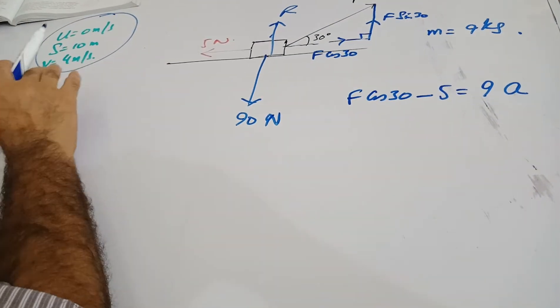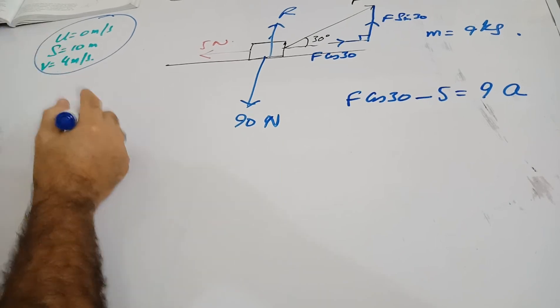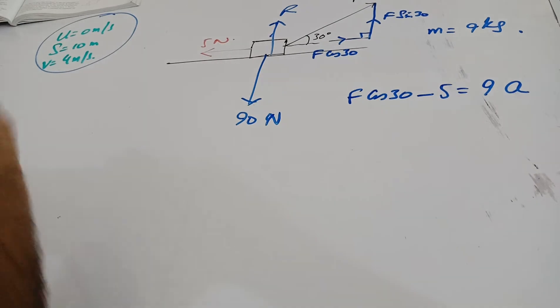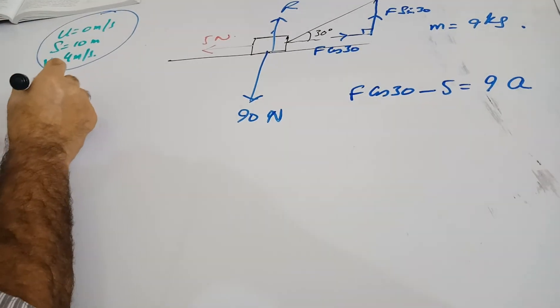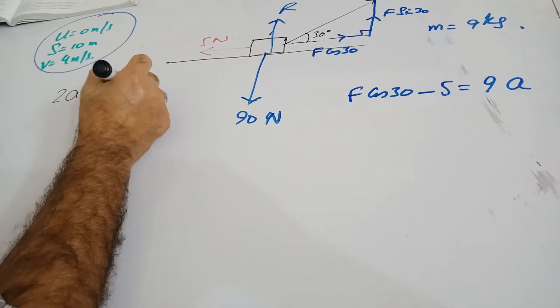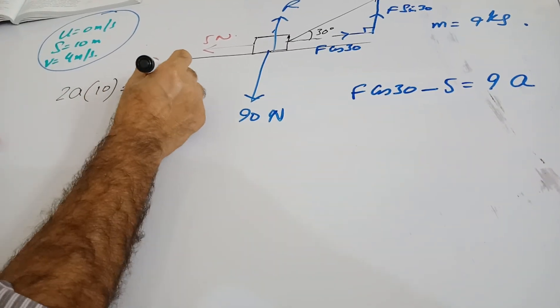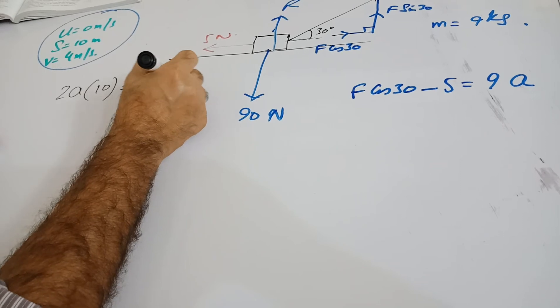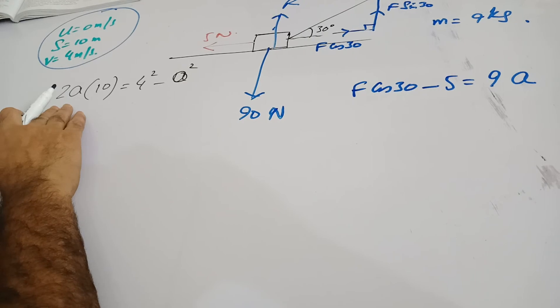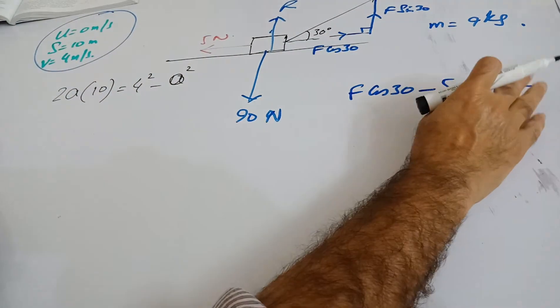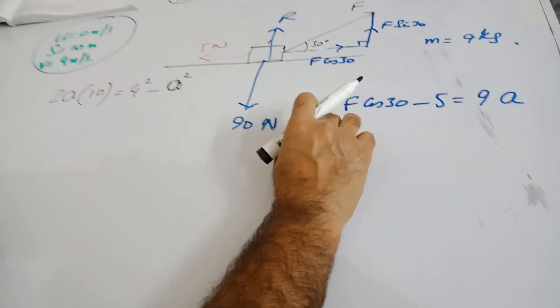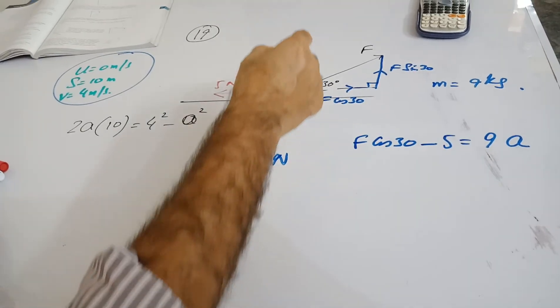If you look at this given information, you can see that you can find the acceleration from this. So I think the equation that we shall be using here is, let me use this black marker, this is 2AS equals V squared minus U squared, which is zero. So you find your A from here, you substitute this into this equation, and that will give you the F.